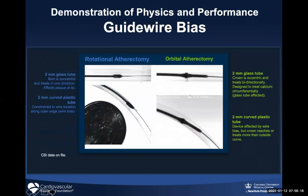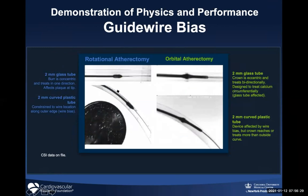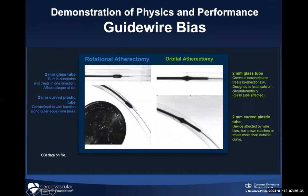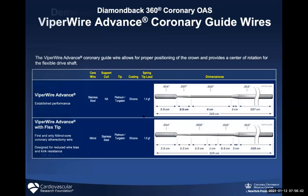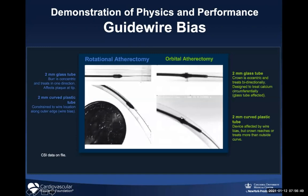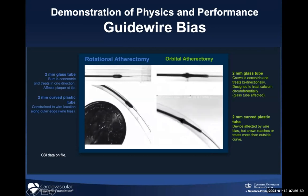Guidewire bias works for and against orbital atherectomy. With the rotablator you groove into a specific spot; with orbital, you're biased on the outer curvature, and it goes on both sides of the vessel. But with extreme wire bias and tortuosity, this rotation could actually wobble and go further into the wall - which is why in extreme curves you really want to avoid using orbital atherectomy. What works to its advantage in straighter anatomy or slight curvature can be potentially problematic in extreme curvature with extreme wire bias.